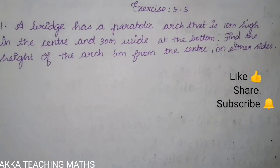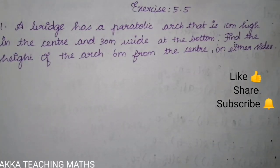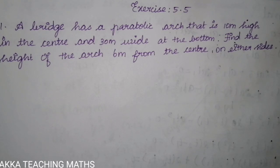Hi friends, welcome to Aka Teaching Max. Exercise 5.5 first question: a bridge has a parabolic arch that is 10 meter height in the center and 30 meter wide at the bottom. Find the height of the arch 6 meter from the center on either side.